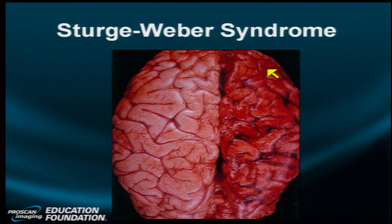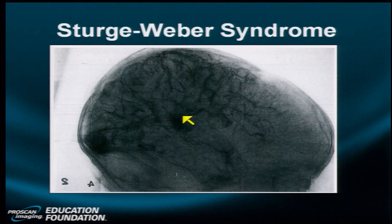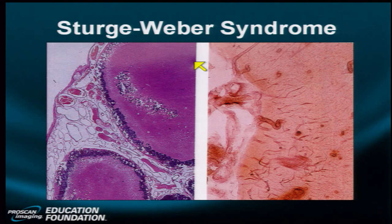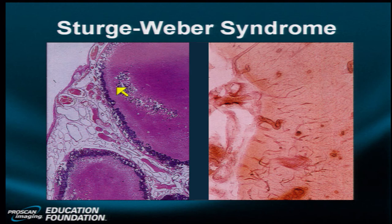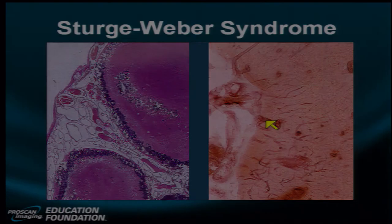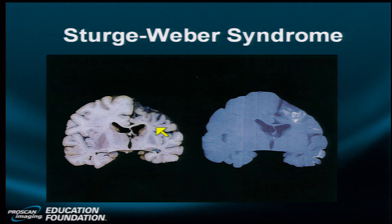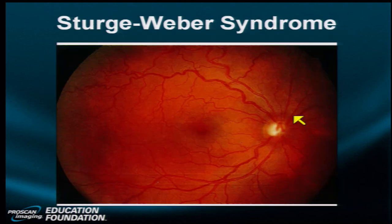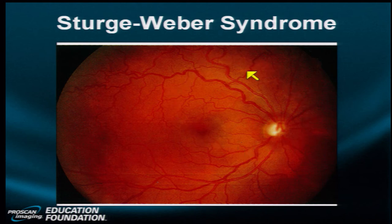This axial gross specimen demonstrates the venous telangiectasia coating the surface of the brain on the patient's left side, associated with generalized atrophy of the entire cerebrum. An angiogram demonstrates the venous components of this disorder. Histology confirms a venous etiology, with photomicrographs showing veins on the surface rather than arteries. Atrophy of one hemisphere, calcium in the superficial brain, and the characteristic red nevus flammeus appearance of the retina and choroid are all typical of Sturge-Weber.